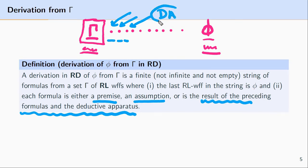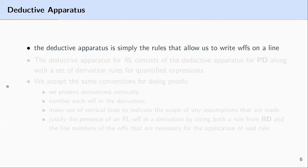In other words, each of the formulas is justified by one of our derivation or proof rules — you can think of it as each formula being justified by the rules of inference or reasoning that we make use of. The deductive apparatus is simply the rules that allow us to write well-formed formulas on a line, and it essentially justifies why a new well-formed formula can be placed at the line it's found at.